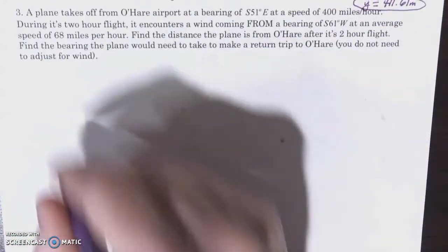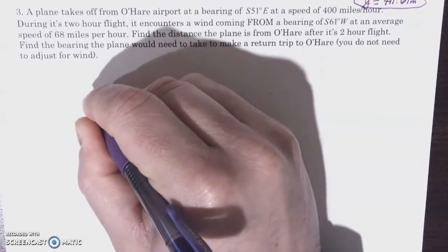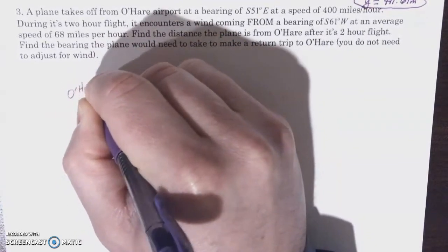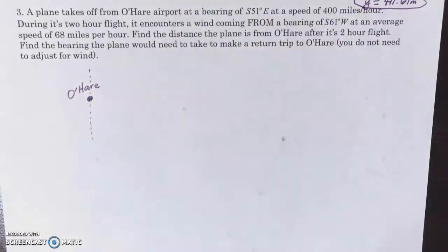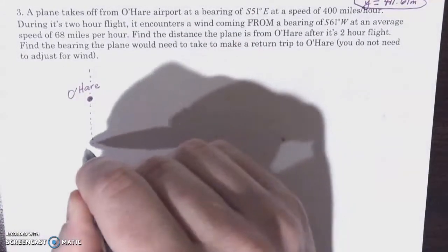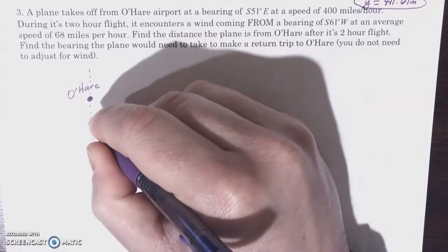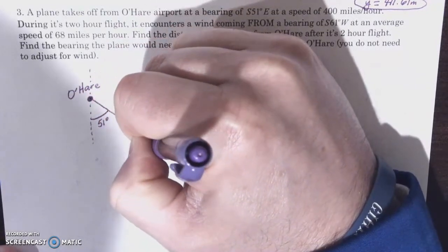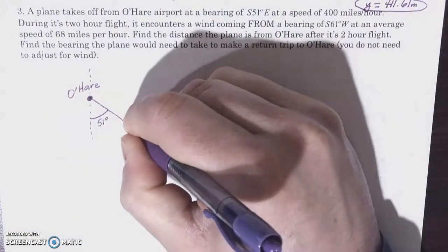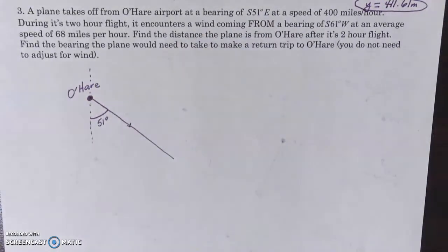Alright, so we're going to be going in this direction. I'm going to make O'Hare here. And let's start by drawing our north-south line of orientation. We're going to open up 51 degrees to the east of south. Here's south, here's east. We're going to open up 51 degrees, and the first leg of our plane's trip is going to be in that general direction. It was traveling at a speed of 400 miles an hour. Let's keep that in the back of our mind.